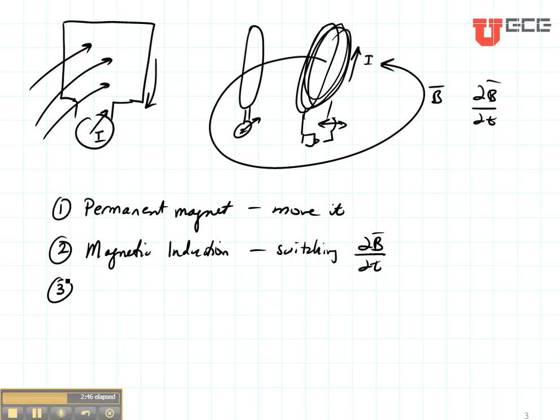Now a third way that we could change the amount of magnetic field that is going through this is have a DC magnetic field but change the loop.